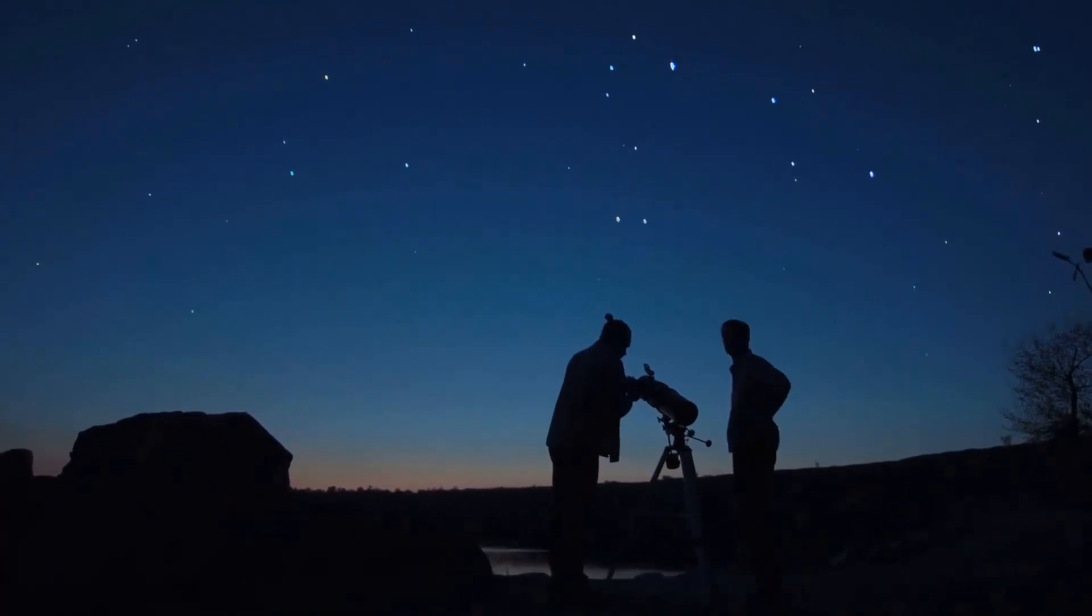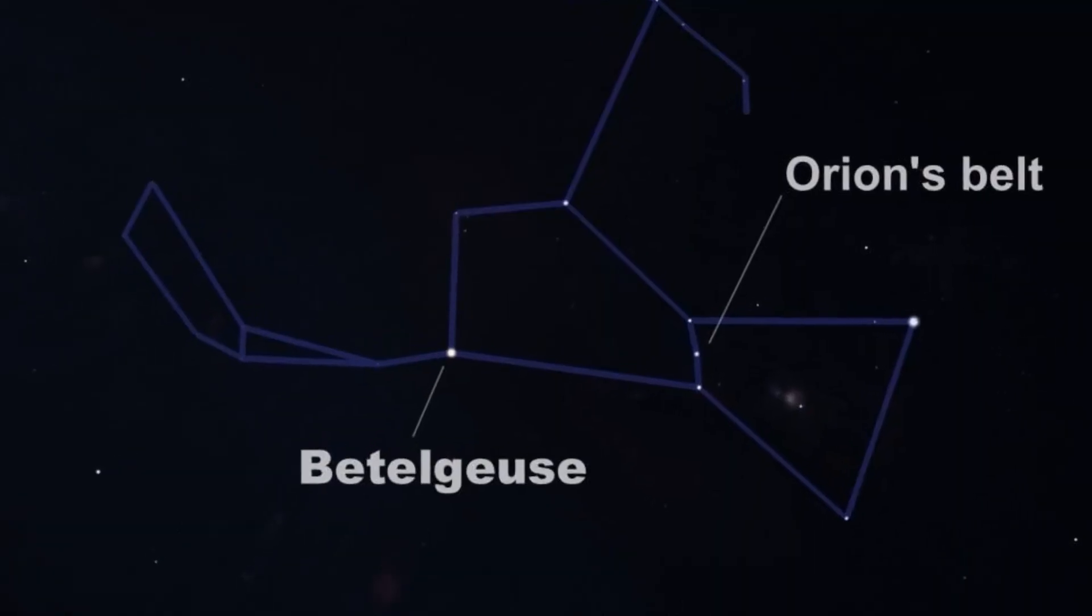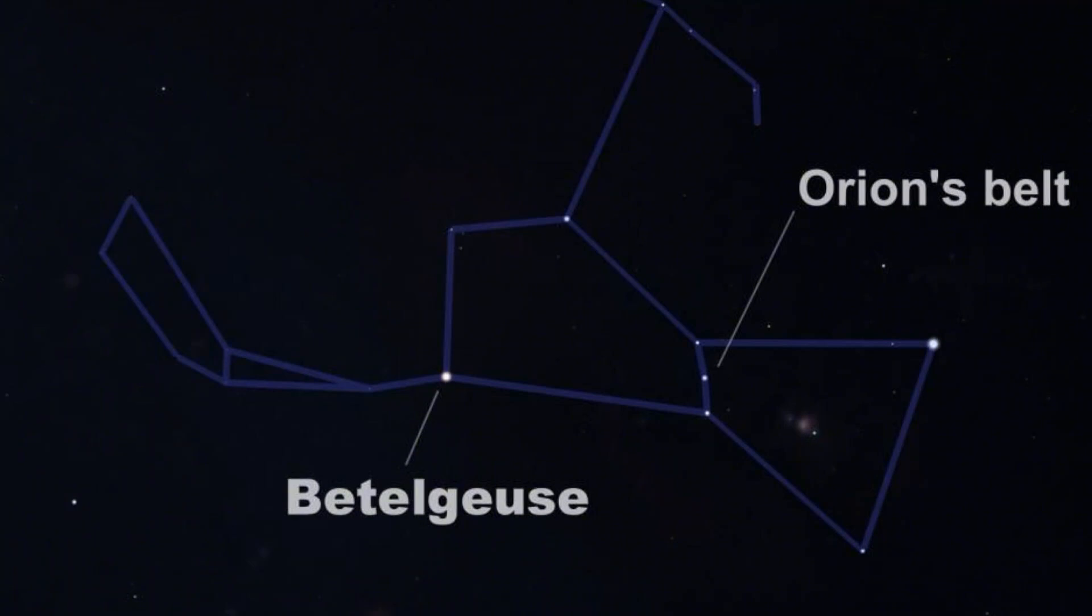For decades, astronomers have kept their eyes on one of the brightest, most enigmatic stars in the night sky. This star is called Betelgeuse, the colossal red supergiant resting in the shoulder of Orion.